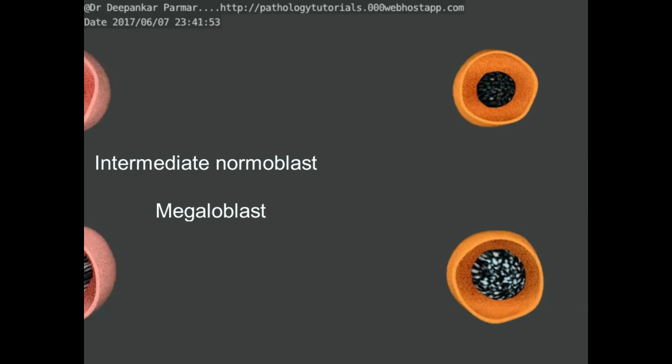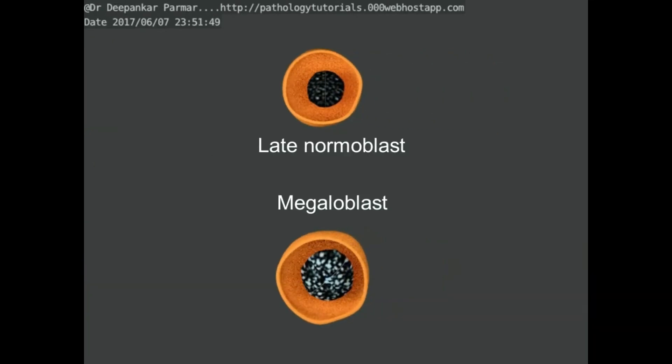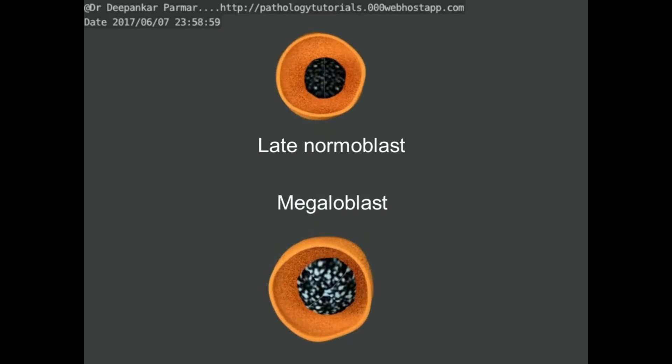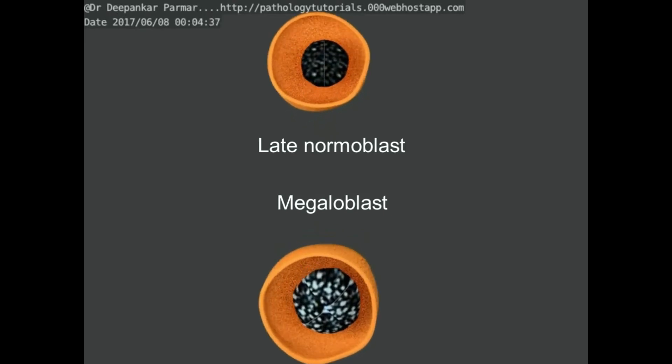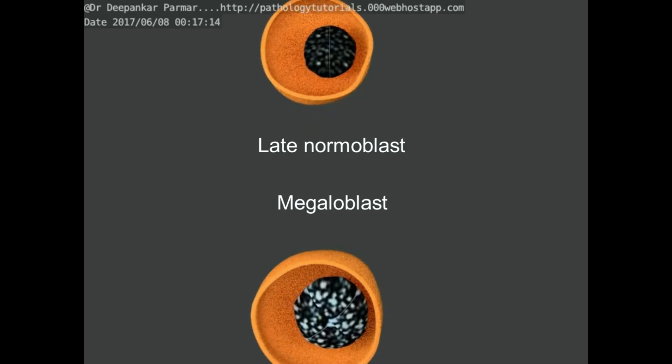Coming to the later stages of erythroid series, we now see a late normoblast stage confirmed by an HB rich orange cytoplasm and a highly condensed nucleus.